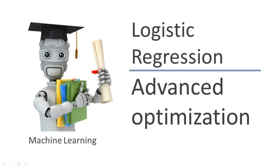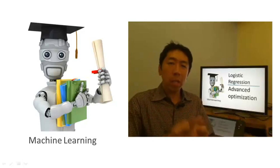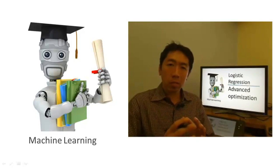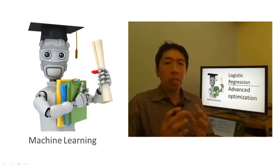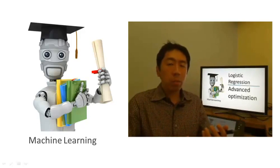In the last video, we talked about gradient descent for minimizing the cost function J of theta for logistic regression. In this video, I'd like to tell you about some advanced optimization algorithms and concepts. Using some of these ideas, we'll be able to get logistic regression to run much more quickly than gradient descent, and this will also let the algorithms scale much better to very large machine learning problems, such as if we have a very large number of features.